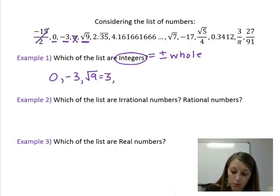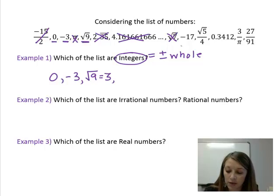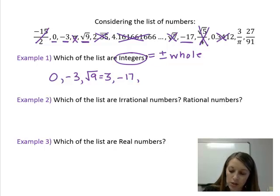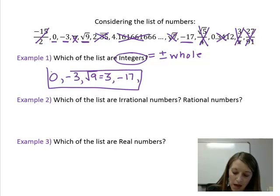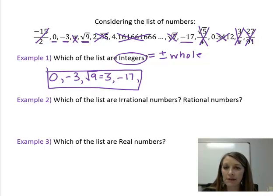Back to my list. 2.35 repeating is a decimal. 4.16 is a decimal. Square root of seven does not come out evenly, so that doesn't go in there. Negative square root of 17 is a whole number. Square root of five over four doesn't fit in there. 0.3412 is a decimal. And the last two are fractions which do not simplify as whole numbers. So I have my final answer here. Zero, negative three, square root of nine which simplifies to be three, and negative 17.